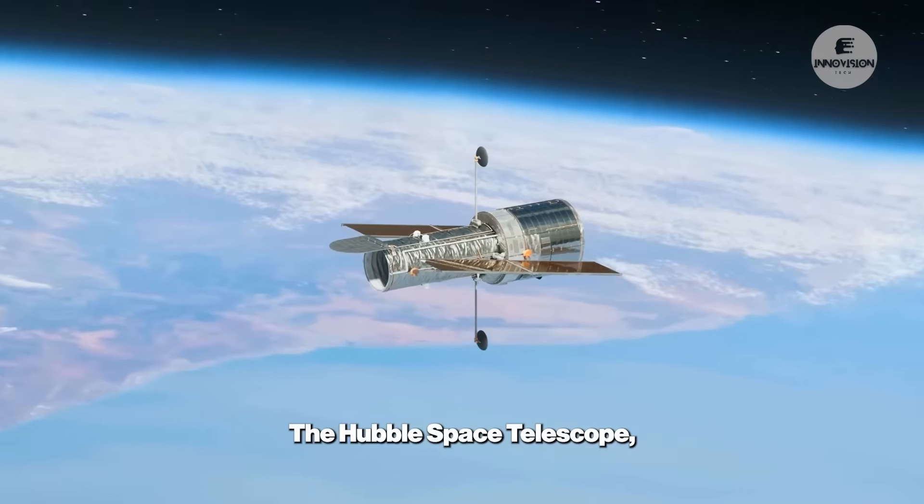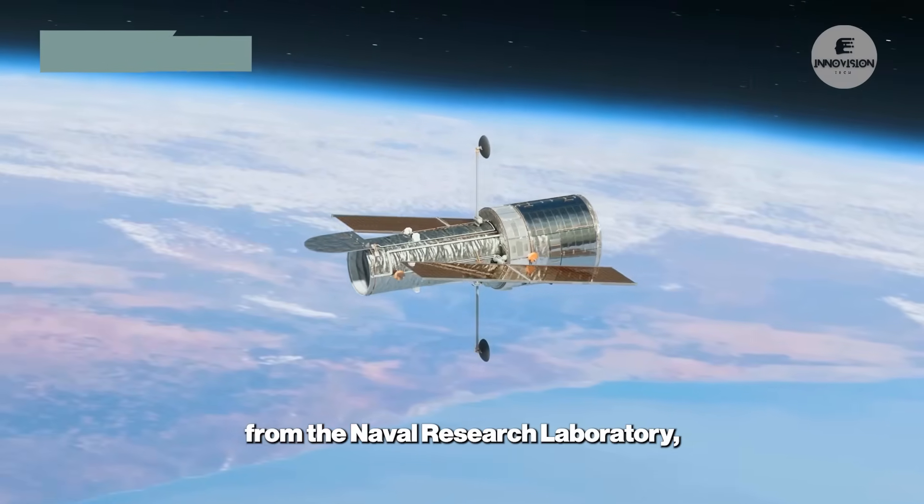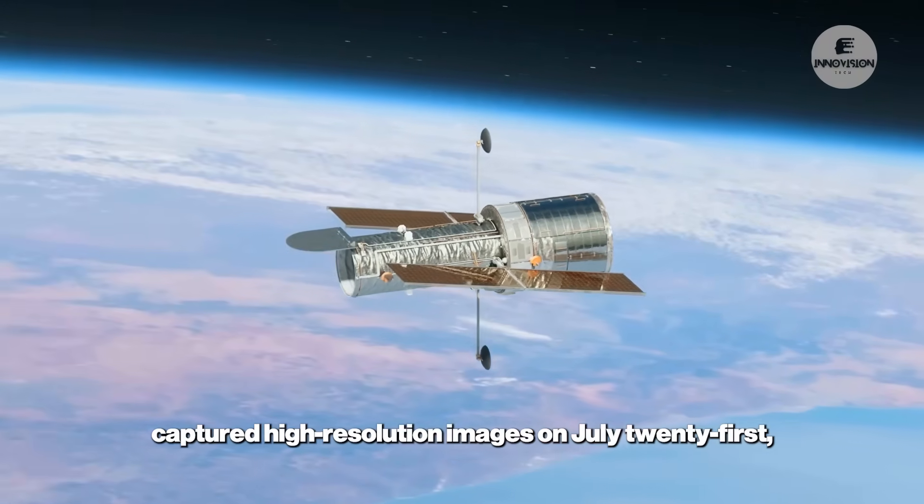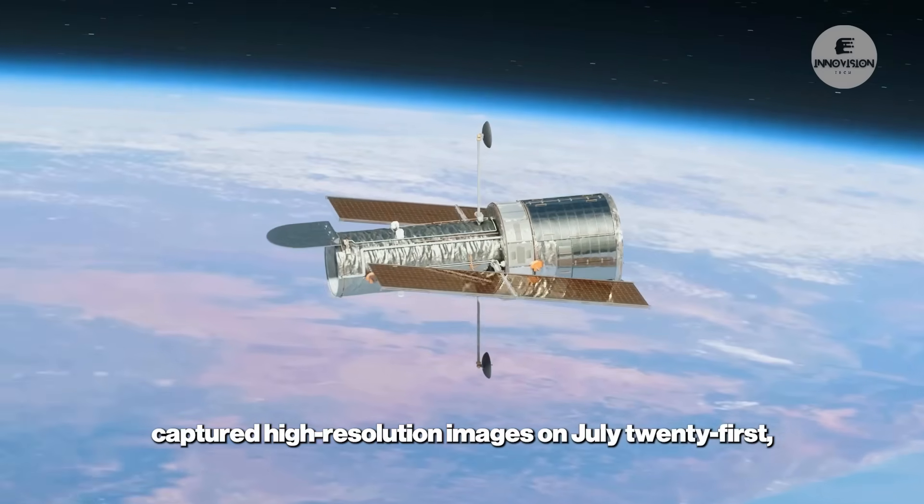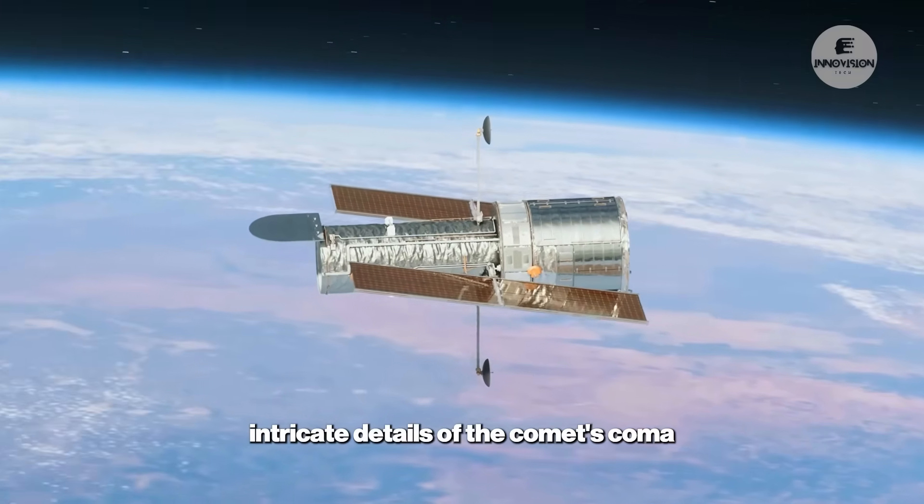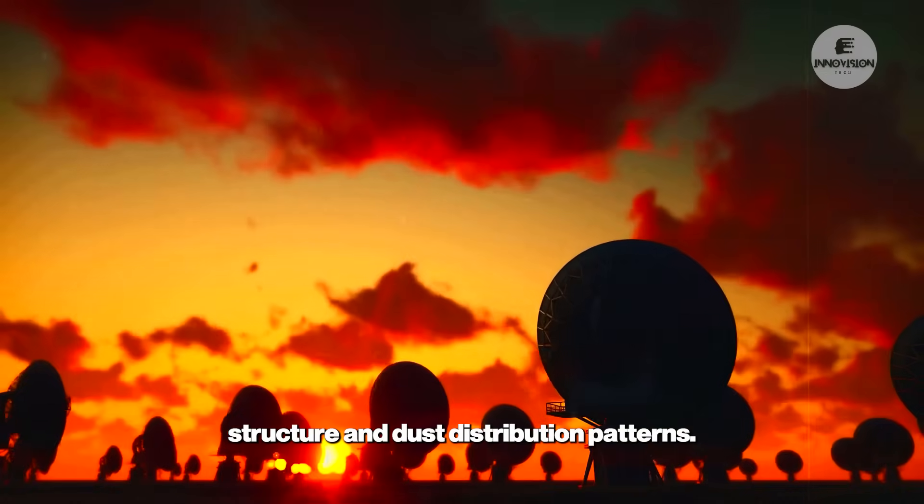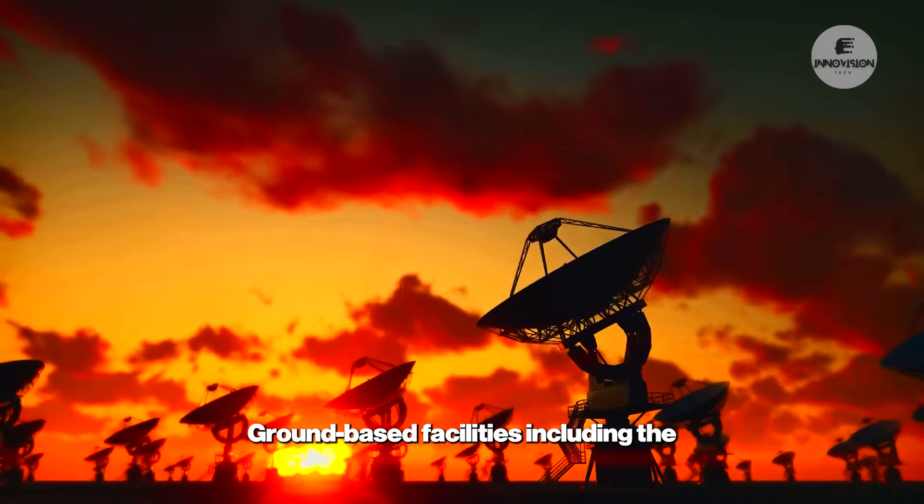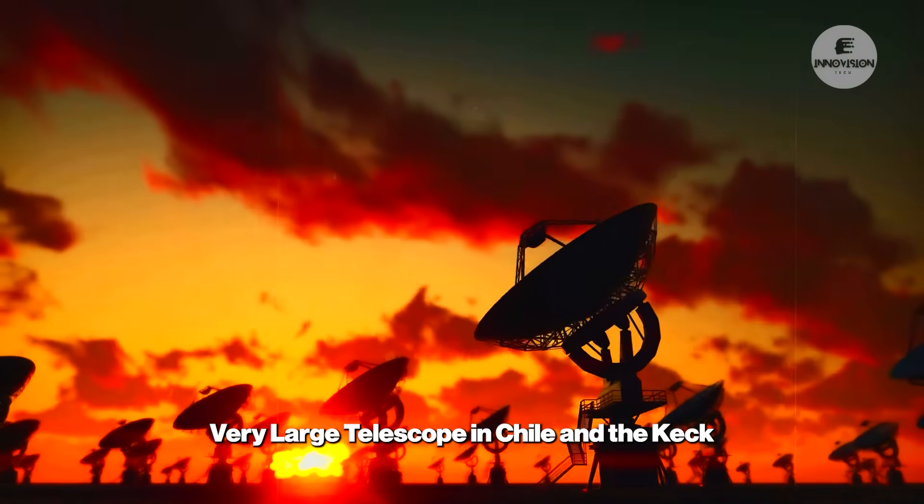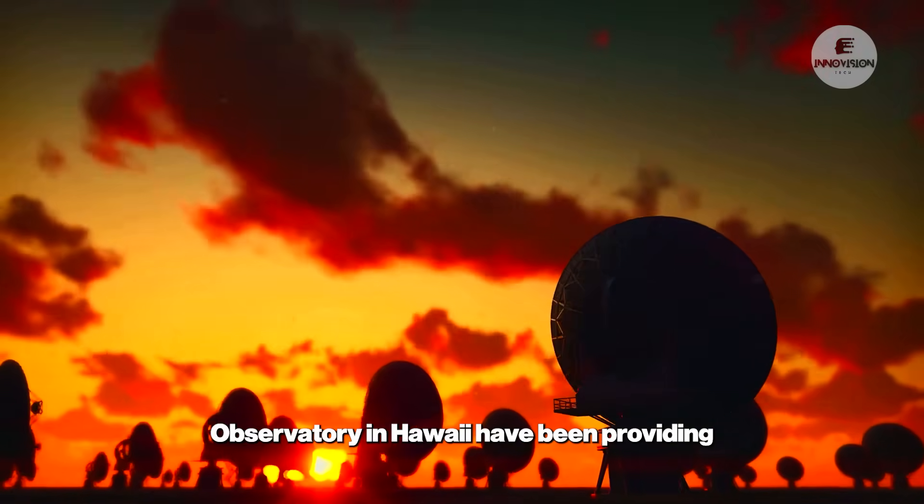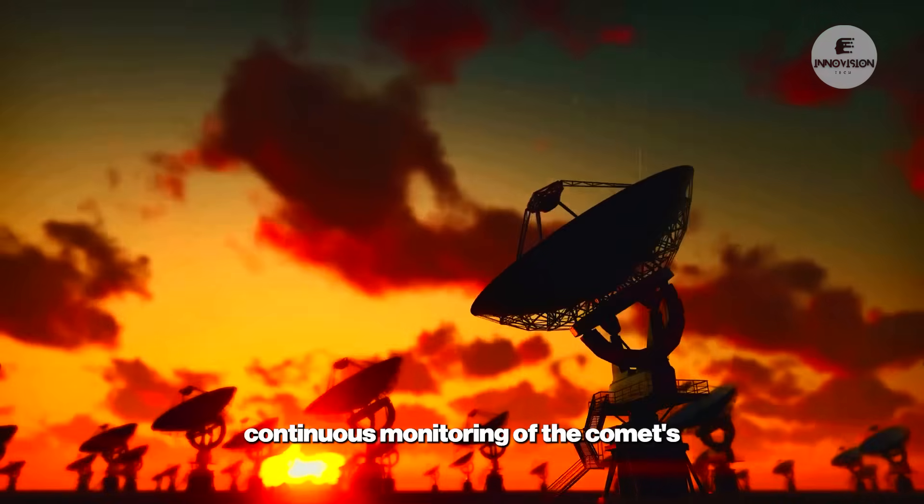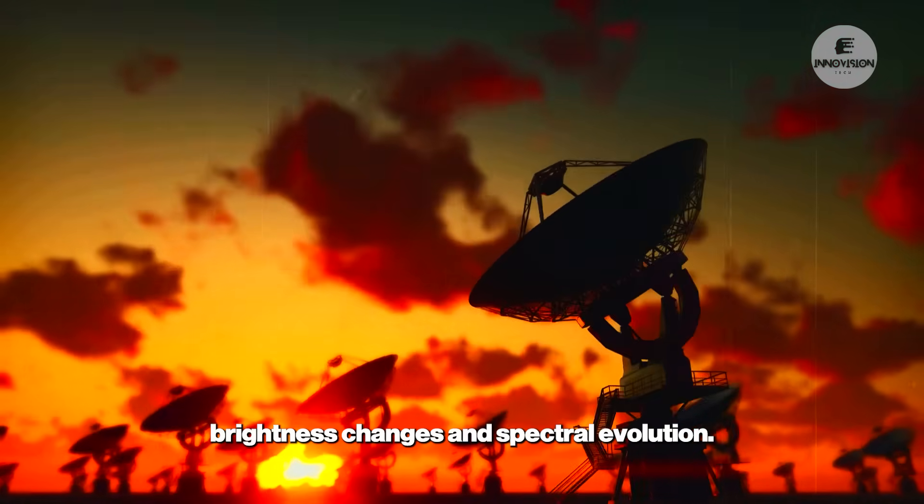The Hubble Space Telescope, under the direction of Matthew Knight from the Naval Research Laboratory, captured high-resolution images on July 21, 2025 that revealed intricate details of the comet's coma structure and dust distribution patterns. Ground-based facilities including the Very Large Telescope in Chile and the Keck Observatory in Hawaii, have been providing continuous monitoring of the comet's brightness changes and spectral evolution.